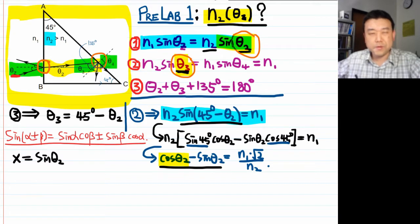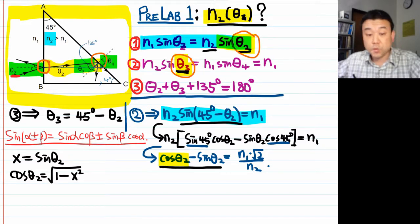Then I remember my Pythagorean theorem, which says sine squared theta plus cosine squared theta is equal to 1. I can solve that for cosine. So cosine theta 2 is square root of 1 minus sine squared theta 2, or x squared.